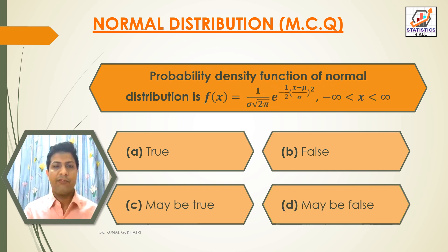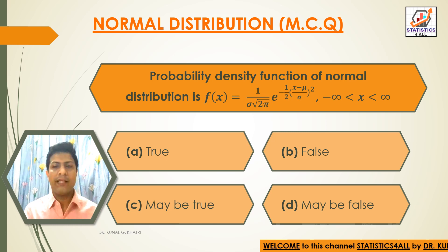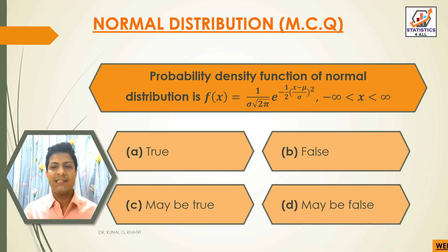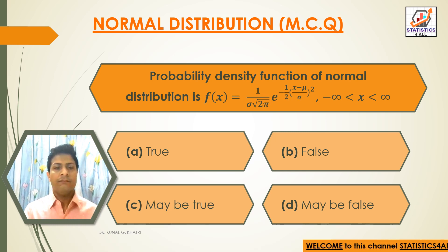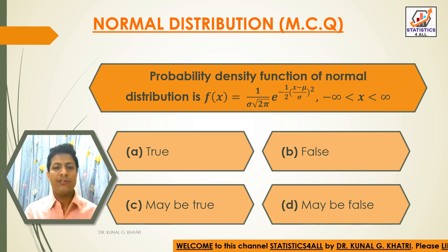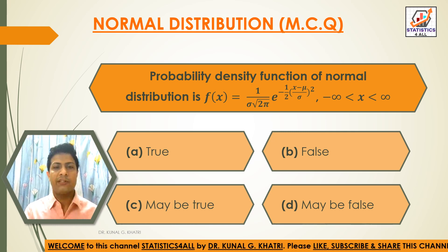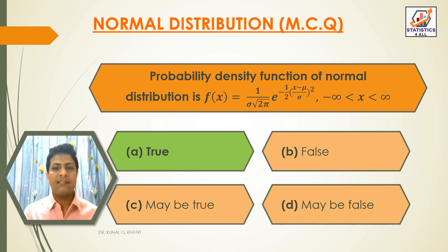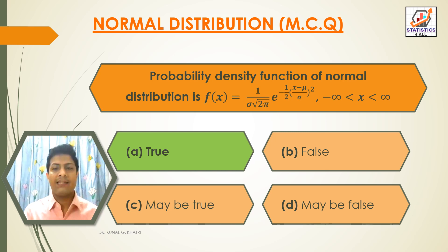Next question: the probability density function of a normal distribution is f(x) = 1/(σ√(2π)) × e^(−½((x−μ)/σ)²), where −∞ < x < ∞. Option A: True. Option B: False. Option C: May be true. Option D: May be false. The answer is Option A — True. This is the correct probability density function of the normal distribution.